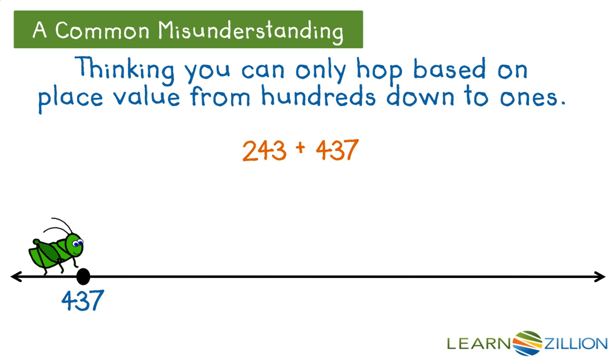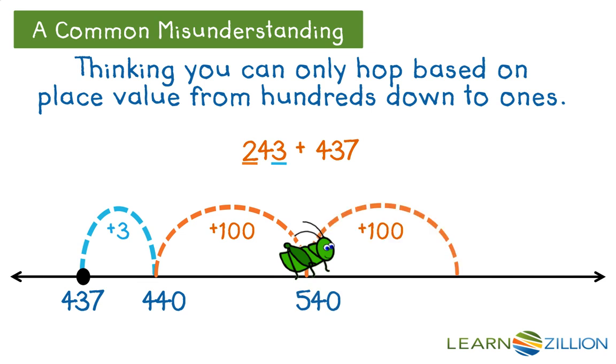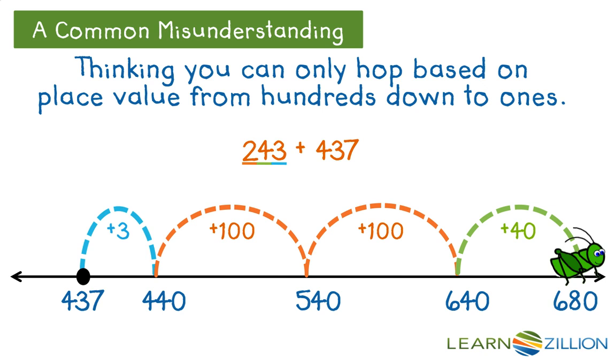But if it makes sense to hop in a different order, that's fine, too. Here, I might hop up 3 first, because 437 plus 3 is 440, and that's an easy number for me to work with. Next, I might break my hundreds into two hops, plus 100, which equals 540, plus another 100, and then I land on 640.